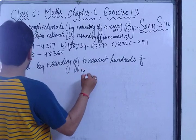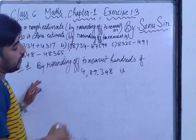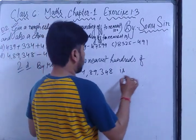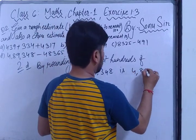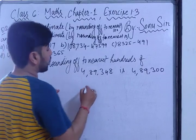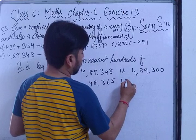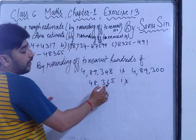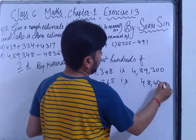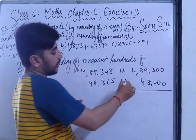For question (d), the first number is 489348 — the hundreds digit area shows 348, which is less than 50 in the tens place, so it rounds to 489300. The second number is 483659 — the tens digit is 5 or greater (65), so the hundreds round up to 483700. It is a subtraction problem.